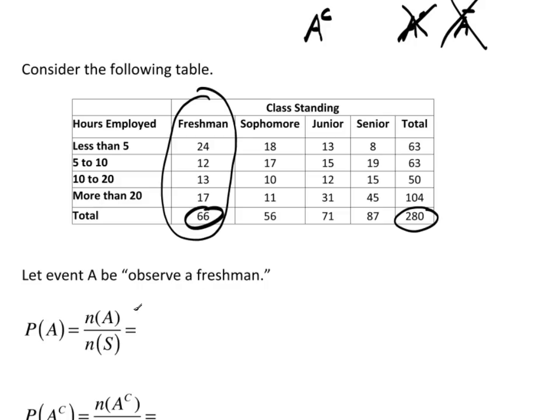So the number of ways it can happen, n(A), is going to be 66 divided by the total of the sample space, which is 280 people. So that's 280. Now, because this is actually sample data, we should probably put the hat on here to indicate that this is actually an empirical probability, not theoretical.